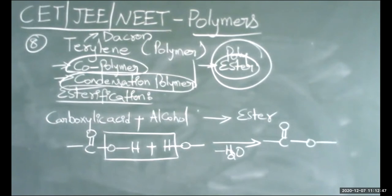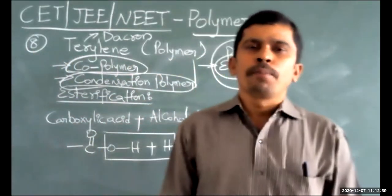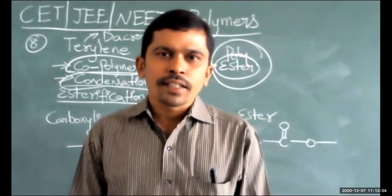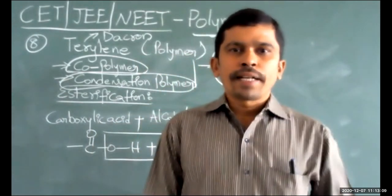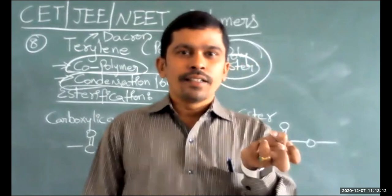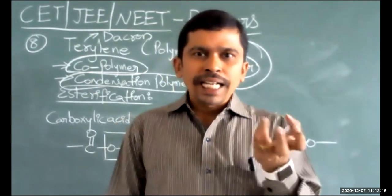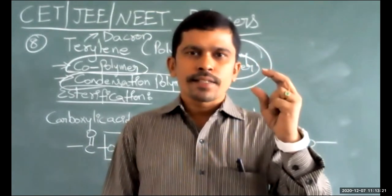Man-made polymers are called synthetic polymers. Terylene is not a naturally occurring polymer. Natural polymer examples include rubber from rubber trees — the white latex is solidified to get natural rubber, which is an example of a natural polymer.